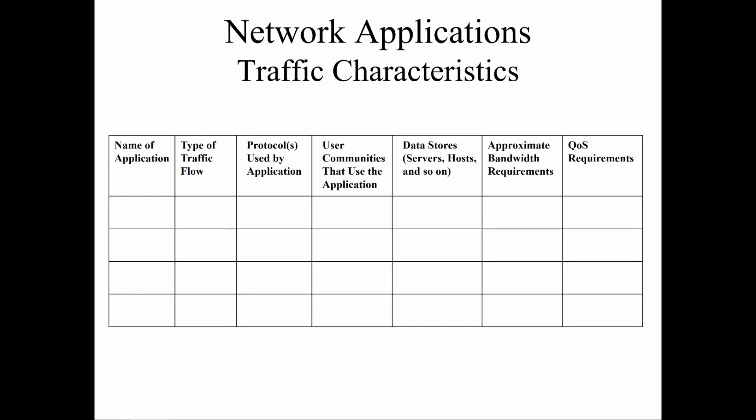Application-based traffic characteristics — QoS requirements, protocols, types of traffic, what resources, name of application — all of this is important, because all of this goes back to how do we actually categorize and organize our data structure? How do we organize our network? How do we know what's real traffic, abnormal traffic, traffic that just randomly occurs? Without this type of documentation, we don't.